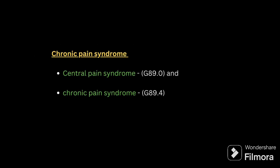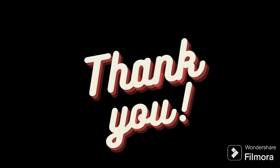Next is chronic pain syndrome. There are two types: central pain syndrome and chronic pain syndrome. Central pain syndrome means loss of sensation in the pain area — code G89.0. Chronic pain syndrome refers to when the pain has gone from the site but the patient still experiences pain in that area; for this, assign the chronic pain syndrome code.